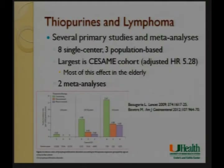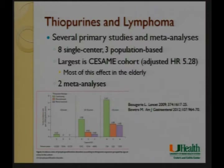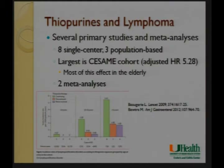On thiopurines and lymphoma: several studies including the CESAM cohort show an adjusted hazard ratio of about 5 times the general population for lymphoma development. However, the highest risk was in patients over 65, while those under 50 and between 50 and 65 had lower risk. Most of the lymphoma risk from thiopurines is concentrated in the elderly, with no significant risk in people under 30.